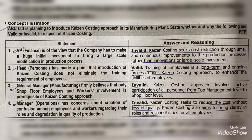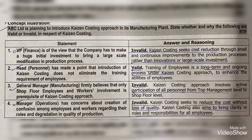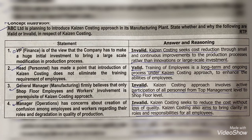Fourth: The Manager of Operations has concerns about creation of confusion among employees regarding their roles and degradation in quality of production. This is invalid because Kaizen Costing never says there should be a loss of quality — it tries to reduce cost while not compromising quality at all.